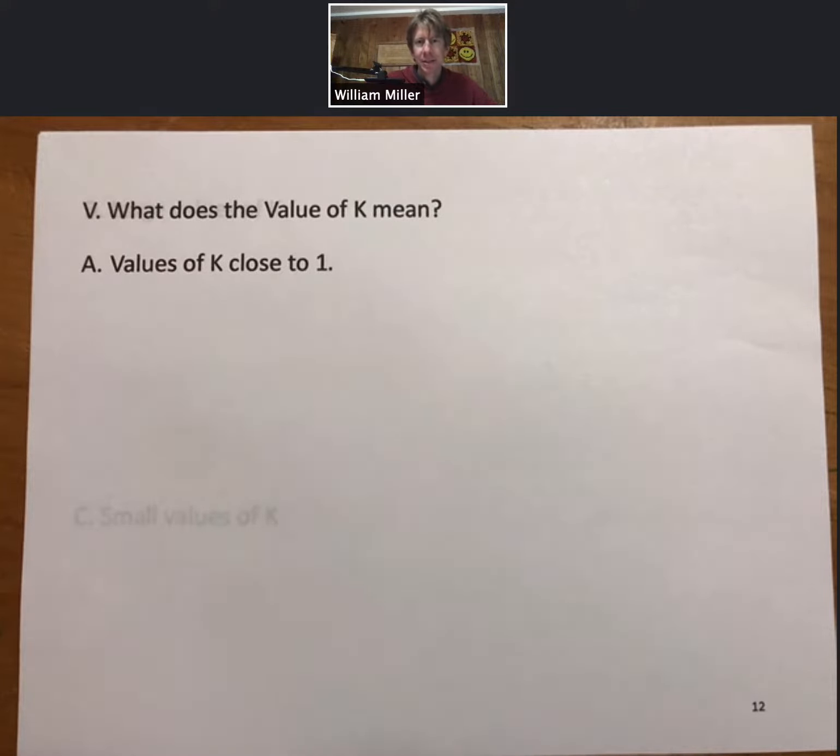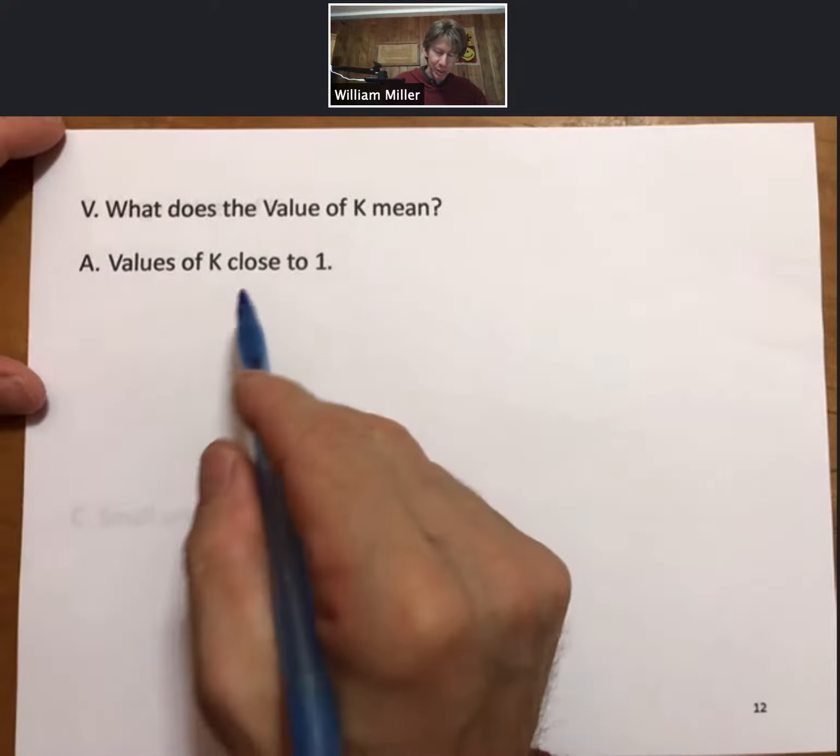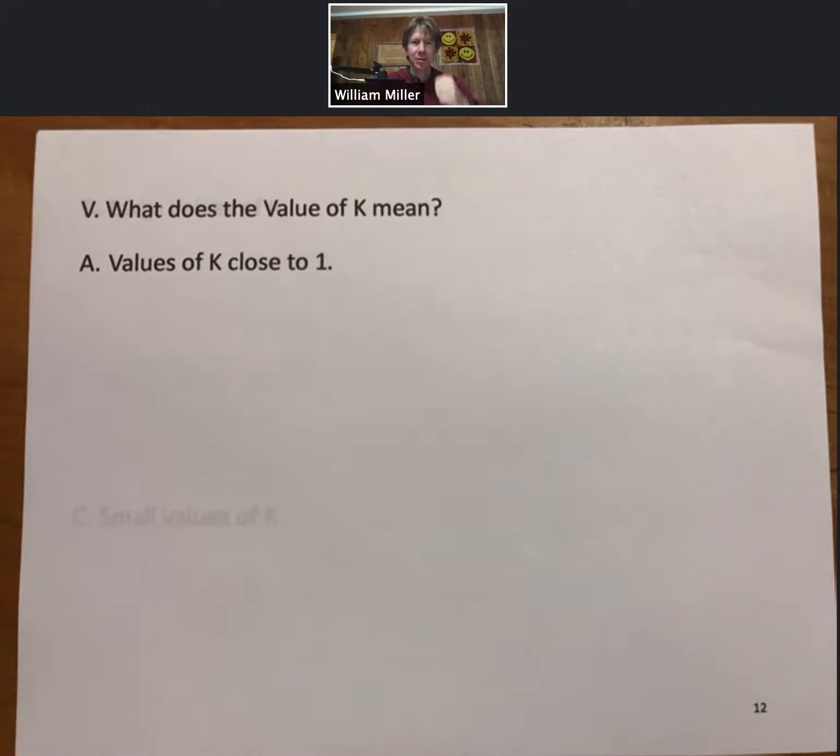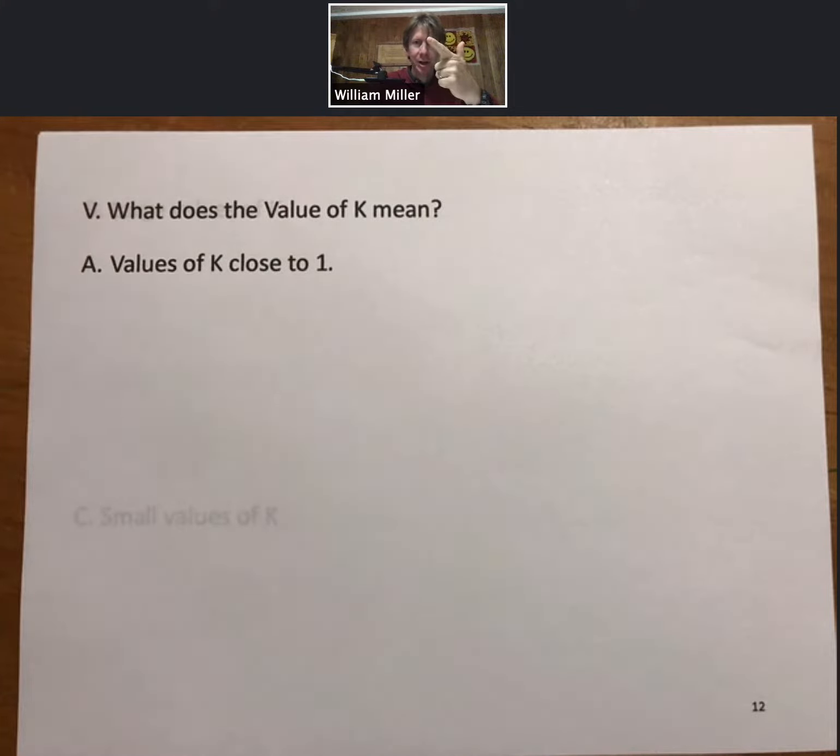We've been tossing around K or equilibrium constant values for a few videos now. Let's talk about what those values mean. There will be three types of K values: K values close to one, very large K values, and very small K values.